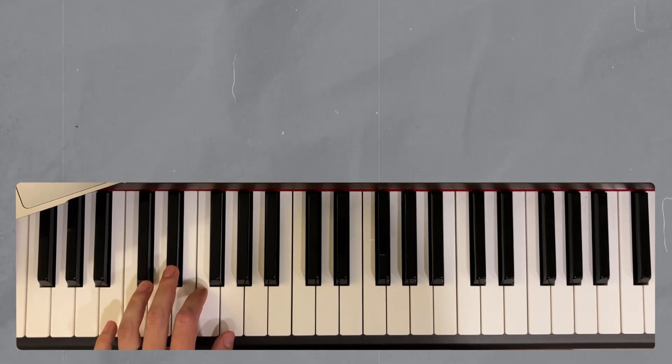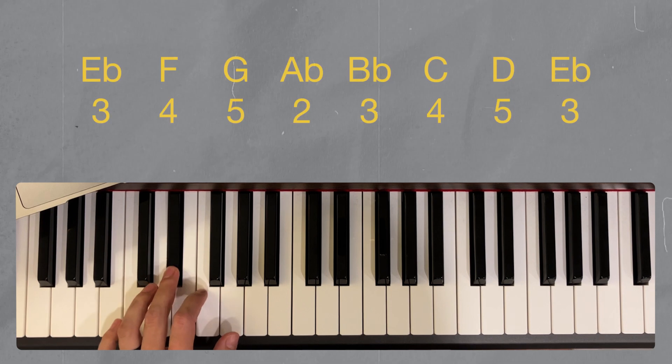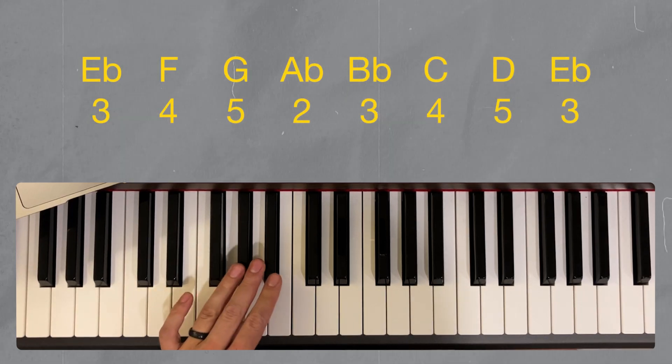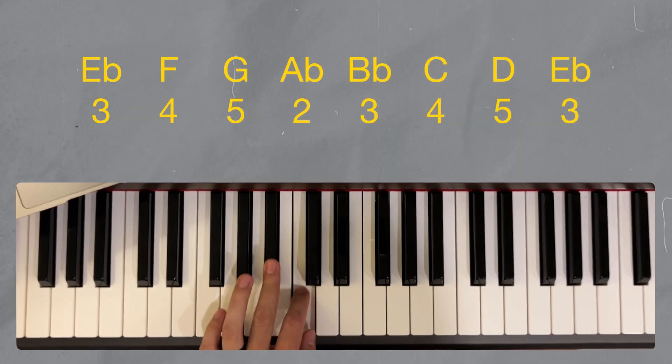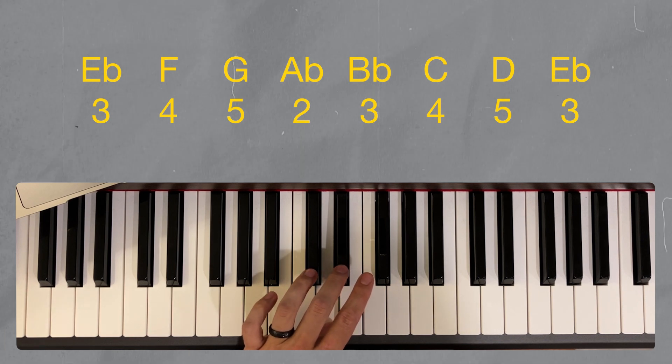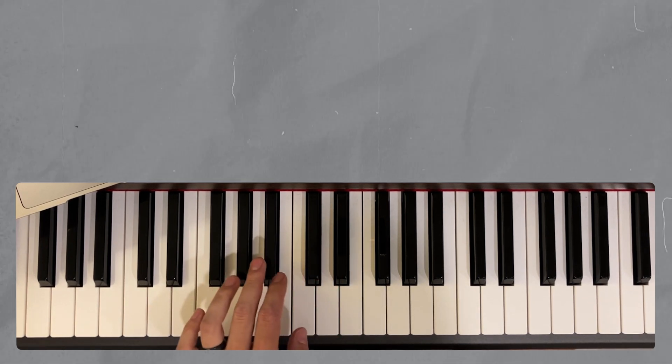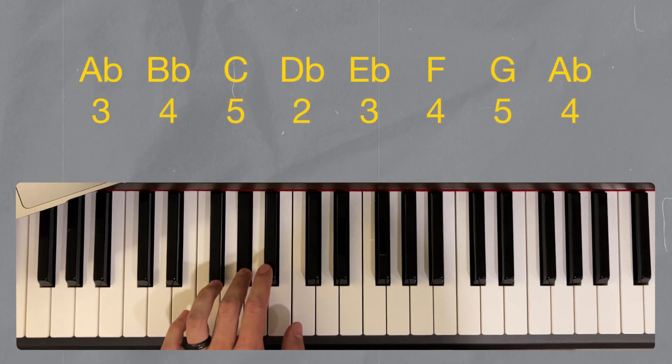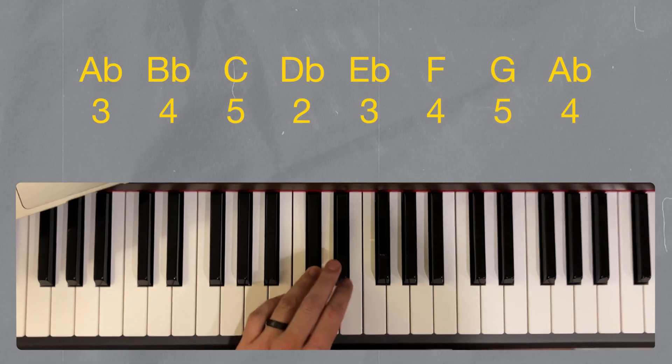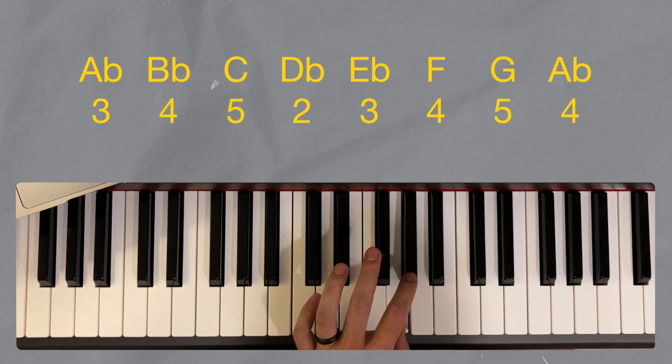E flat, starting with 3, 3, 4, 5, 2, 3, 4, 5, and 3 sometimes 4. A flat, starting with 3, 4, 5, 2, 3, 4, 5.